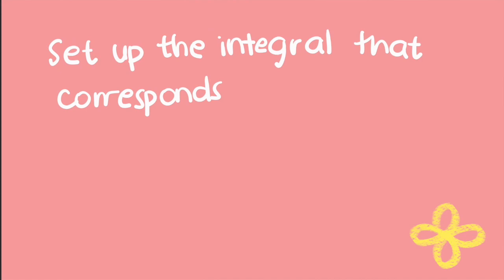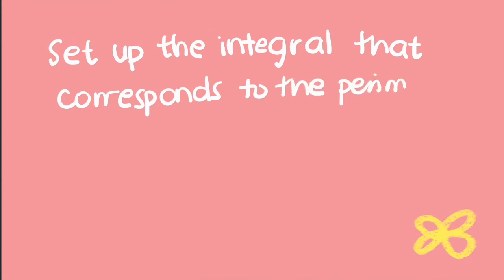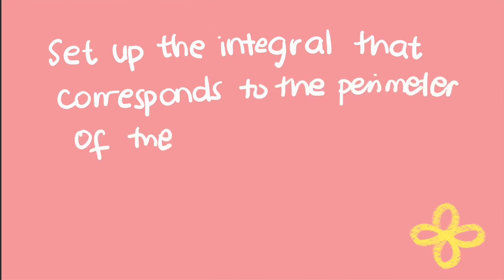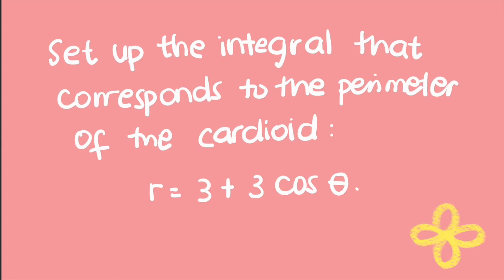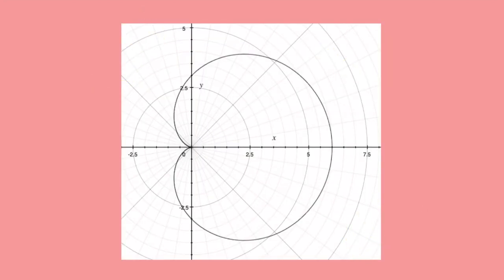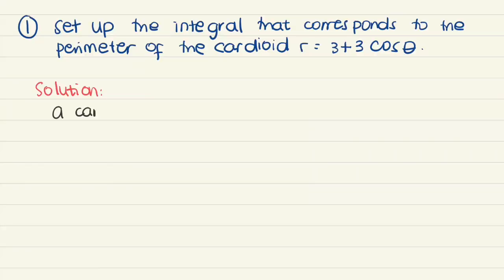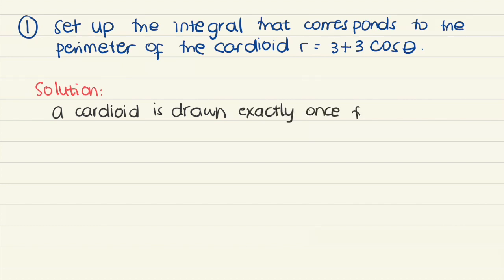This corresponds to the perimeter of the cardioid r equals 3 plus 3 cosine theta. This is the graph of our cardioid. First, we note that a cardioid is drawn once on the interval theta equals 0 to theta equals 2 pi.